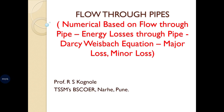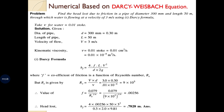Hello friends, myself Professor R.S. Kognore from TSM Durabai-Savan College of Engineering, Narei, Pune. In my previous videos we have discussed all about energy loss through pipe. Now we'll be discussing numericals related to this. The first example is based on major loss given by the Darcy-Weisbach equation: HF = 4FLV² / 2GD, or HF = FLV² / 2GD.